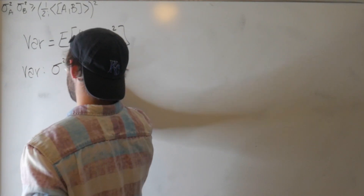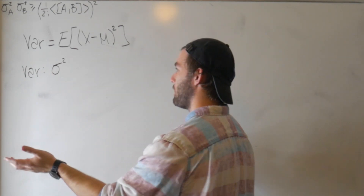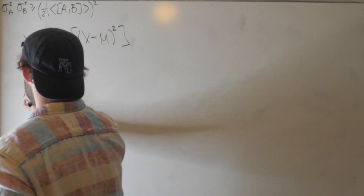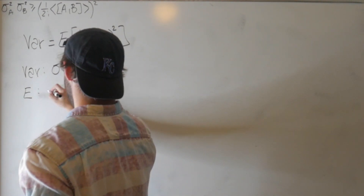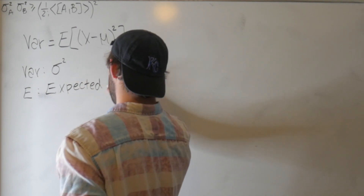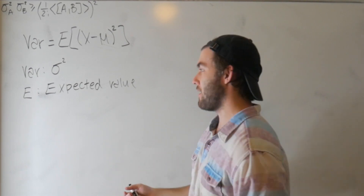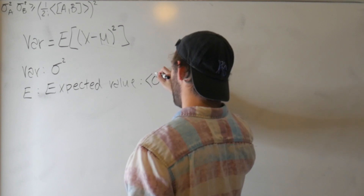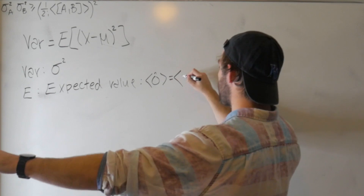Variance is just sigma squared — that's the standard deviation squared. We're going to add a subscript in a bit because we'll be dealing with operators. The expected value E is easy to translate into quantum mechanics — it's just the expectation value. If we have some operator O and want to find its expectation value with respect to some state, that's just the matrix element.